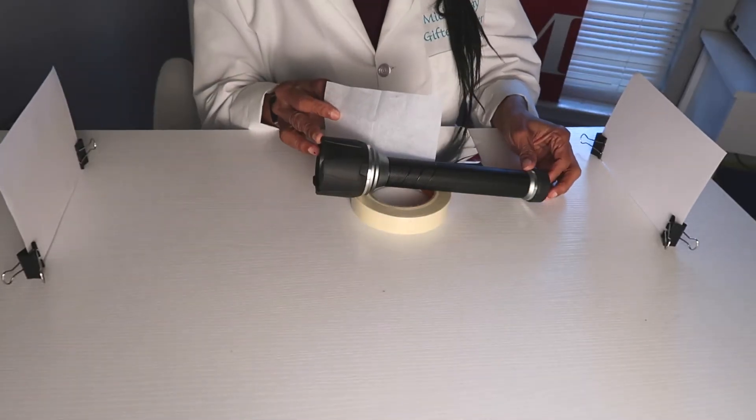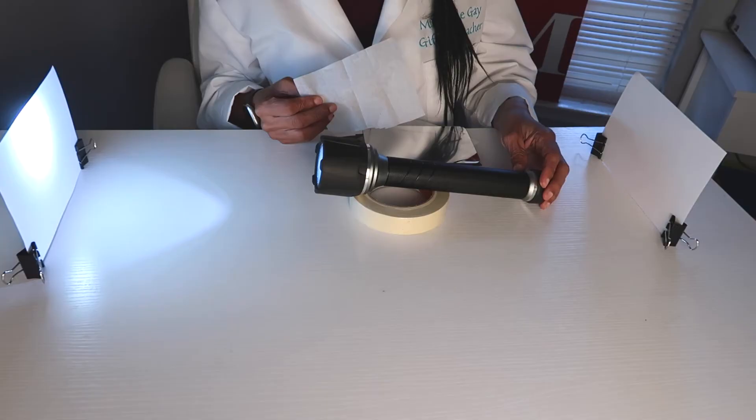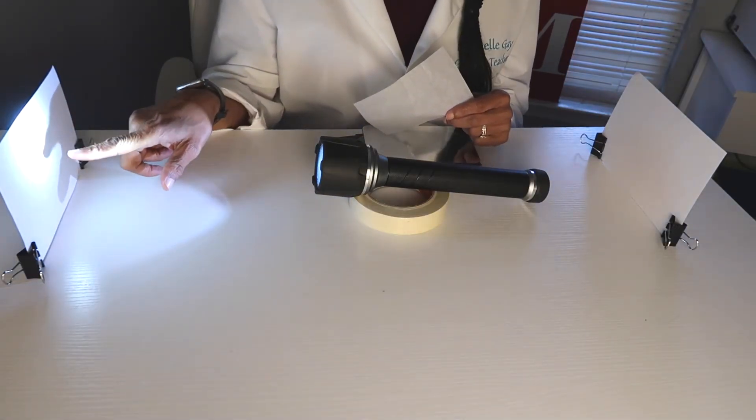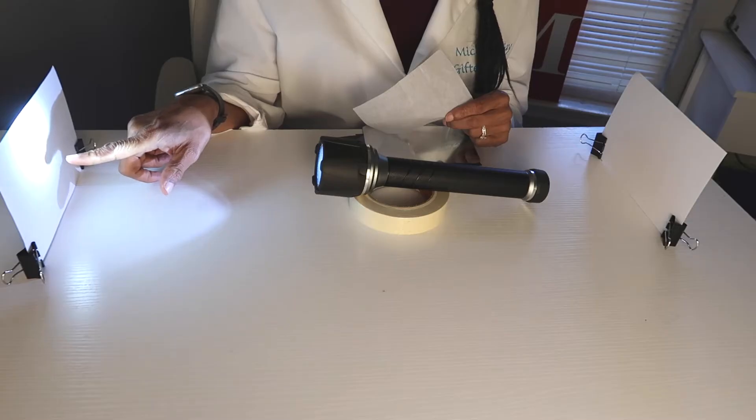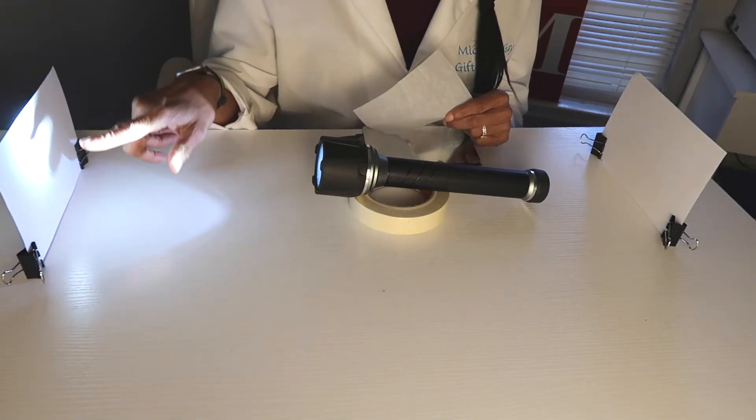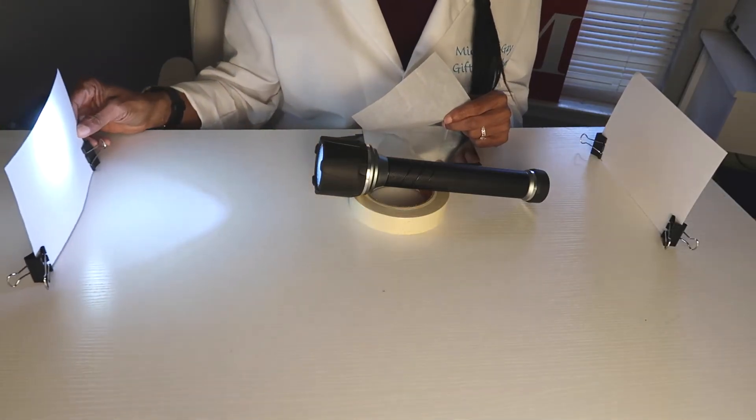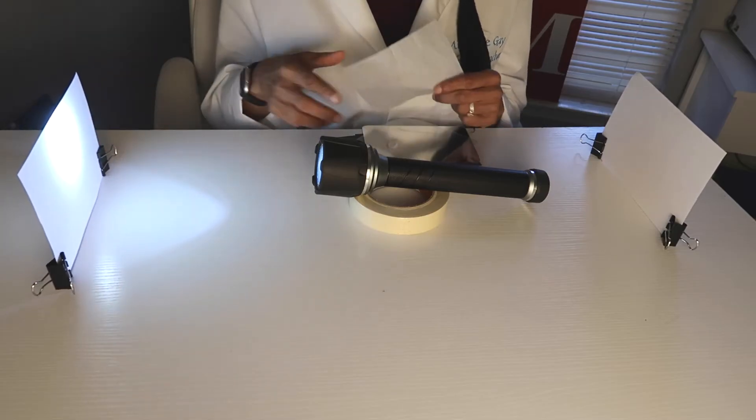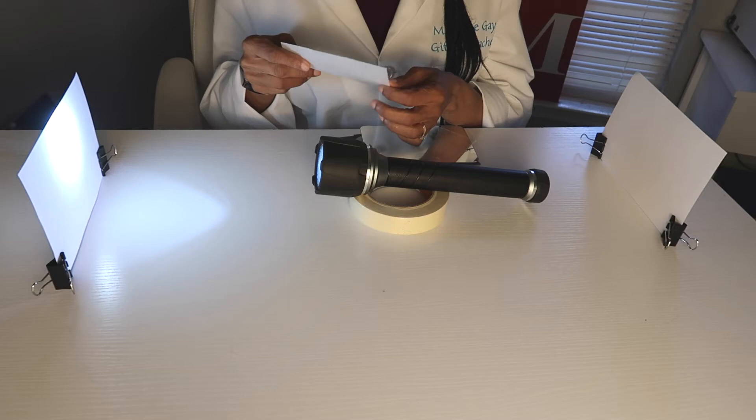Let's see if this is going to be transmitted. And if you can see here, the light is shining on the card. So we see how much light, observe how much light is on the card now. Okay, let's put our paper in front.